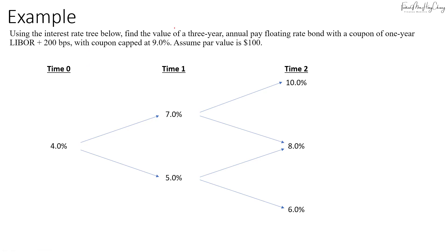Now consider a case with a spread on top of the coupon: a 3-year annual pay floating rate bond with a coupon of 1-year LIBOR plus 200 basis points, capped at 9%, and par value of $100. We increase each rate in the interest rate tree by 200 basis points: 4% becomes 6%, 7% becomes 9%, 5% becomes 7%, 10% becomes 12%, 8% becomes 10%, and 6% becomes 8%.